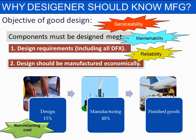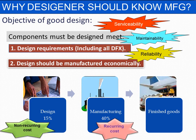The 15% of the design cost is a non-recurring cost, meaning it is a one-time cost spent during the product life cycle. Whereas the 40% of the cost spent on manufacturing is a recurring cost — that is, every time a part is produced, this 40% cost is associated with the finished goods. So it is very essential for a designer to know the manufacturing process.